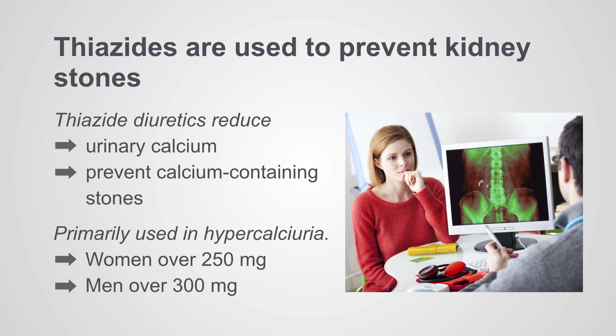We primarily use thiazides to prevent calcium-containing stones, and they work best in patients with primary hypercalciuria — that is, patients with excess calcium in the urine. In women, that is over 250 milligrams in a 24-hour collection; in men, that is over 300 milligrams in a 24-hour collection.